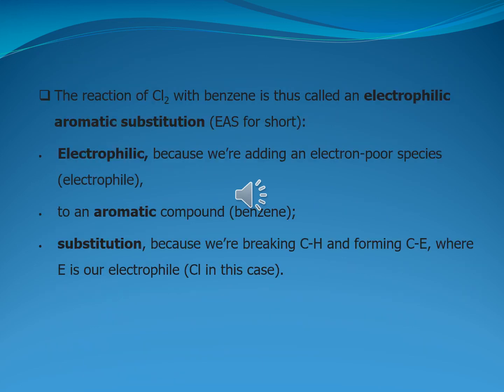The reaction of chlorine with benzene is thus called an electrophilic aromatic substitution, abbreviated as EAS. Electrophilic, because we are adding an electron-poor species — the electrophile — to an aromatic compound, that is benzene. And substitution, because we are breaking a carbon-hydrogen bond and forming a C-E bond, where E is the electrophile, which may be a chlorine atom in this case.